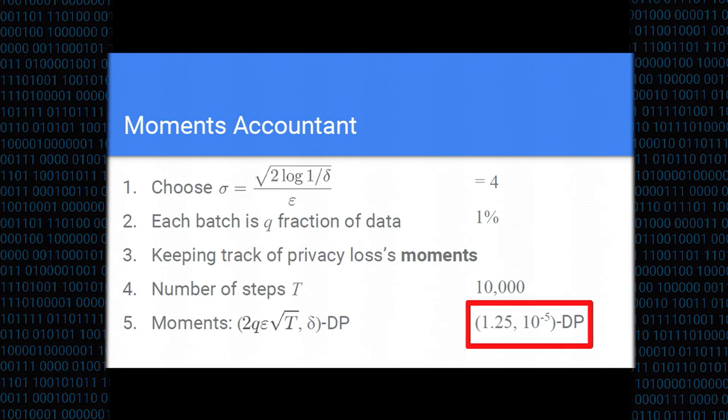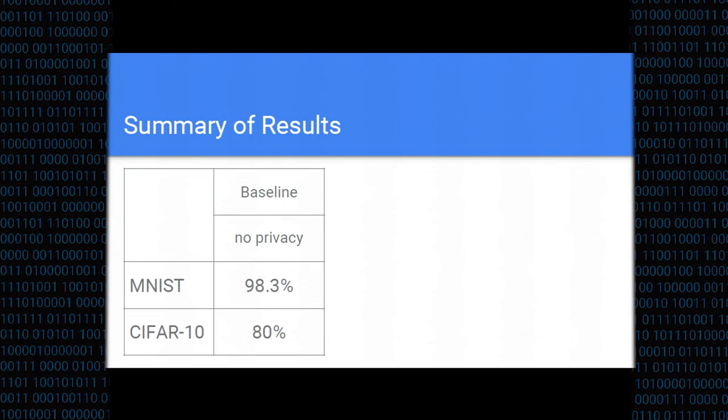Let me bring up the results of our work. So this is the baseline that we are comparing ourselves with, where on MNIST, the baseline models achieved accuracy of 98.3% with no privacy. On the CIFAR-10, the colored images, we've got 80% accuracy.